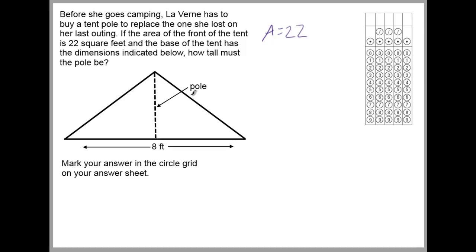What else do we know? We don't know the height — that's what we're trying to find out, the distance from the base to the top. We do know the distance across the base, which for a triangle is the base. So we know that the base of the triangle is 8 feet. With area equal to 22 and base equal to 8, we might be reminded of the formula for the area of a triangle.